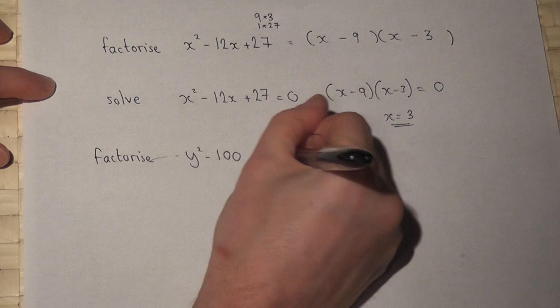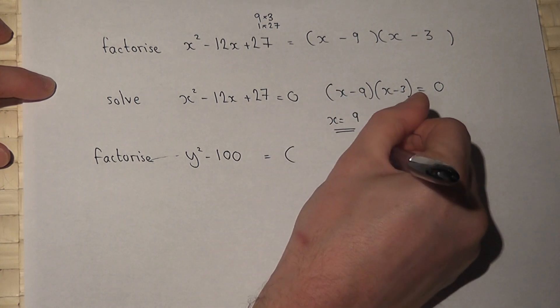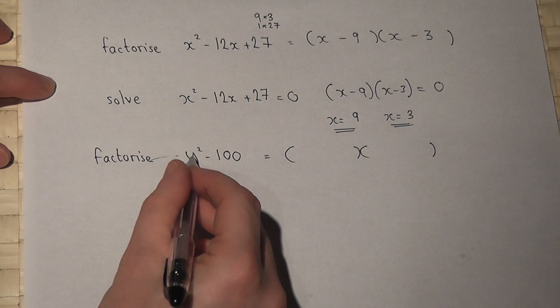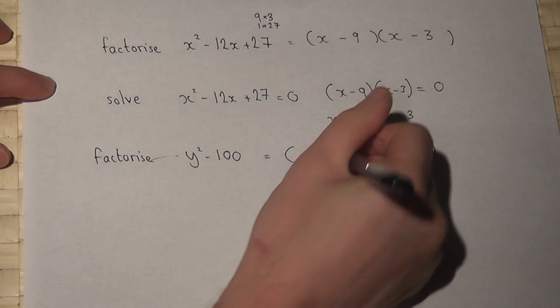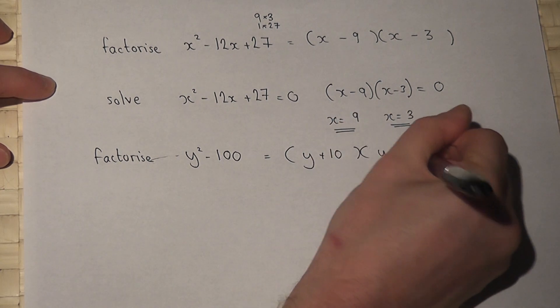This is also a double bracket, so we need a y and a y. To get -100, we put +10 and -10.